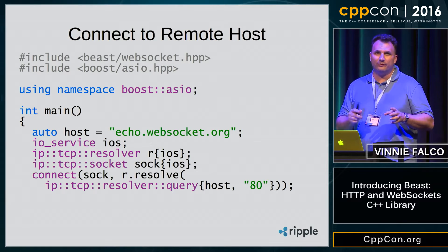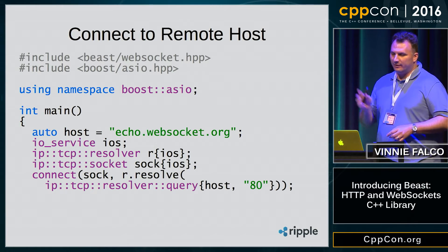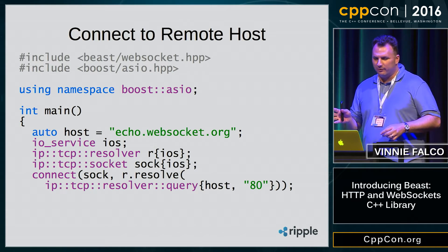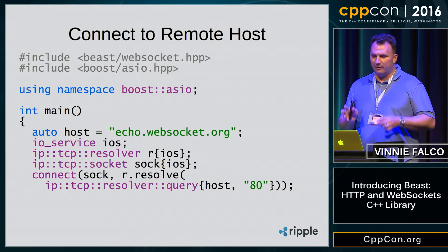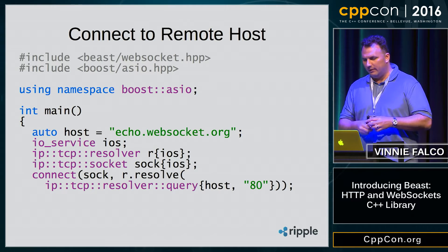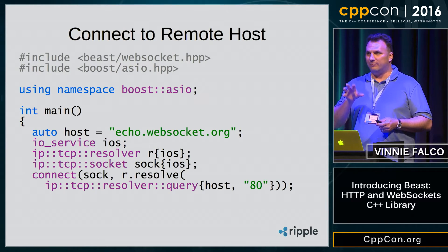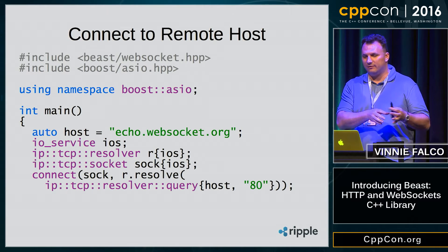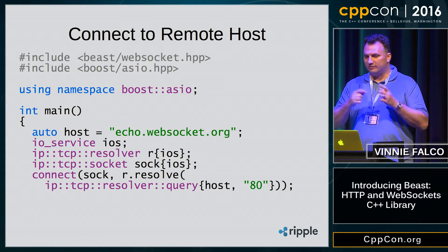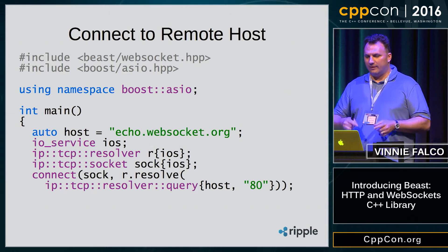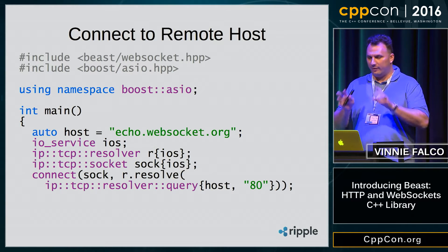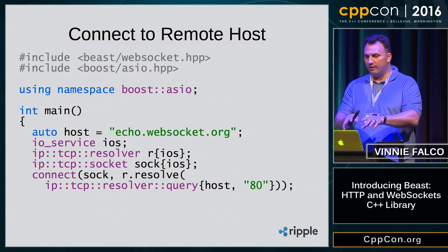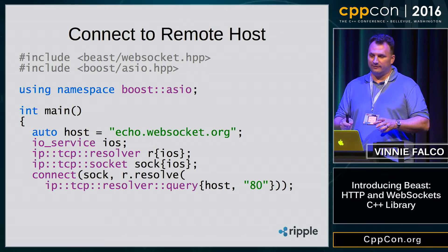The first thing we need to do is connect to the remote host. In this sample code, the Boost ASIO symbols are purple. We need to establish our socket connection — there's no Beast code here yet. This is Boost ASIO: we're resolving a DNS name and then connecting to it. When this code is done running, we'll have a connected socket that's ready to roll.